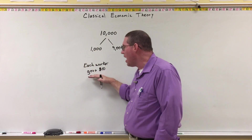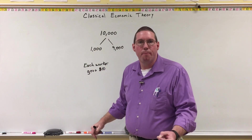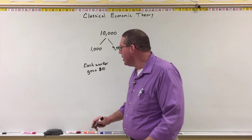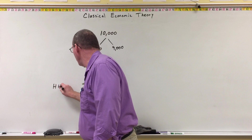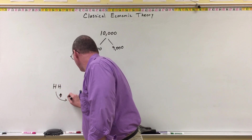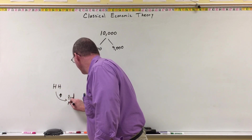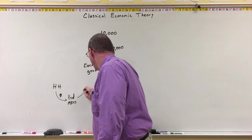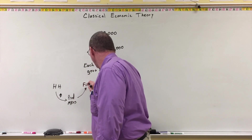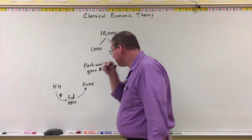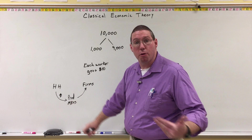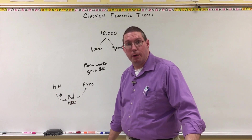They can't be strong demanders. They can't be strong households buying from product markets, where that money goes to firms. So they can't buy very much from the product markets, so there won't be very much demand.